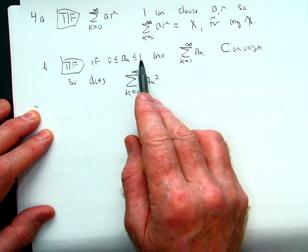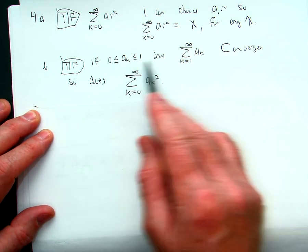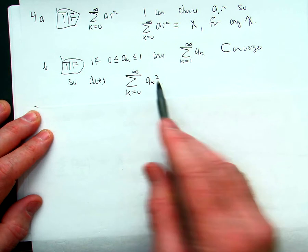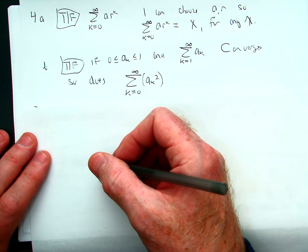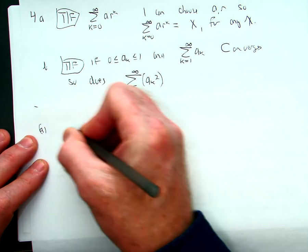And the second one is if my ak is between zero and one, so it's positive but less than one in absolute value or less than equal and ak converges, and so does the series made up of the terms where I square ak. So for a, the idea is I want to solve x equals this.